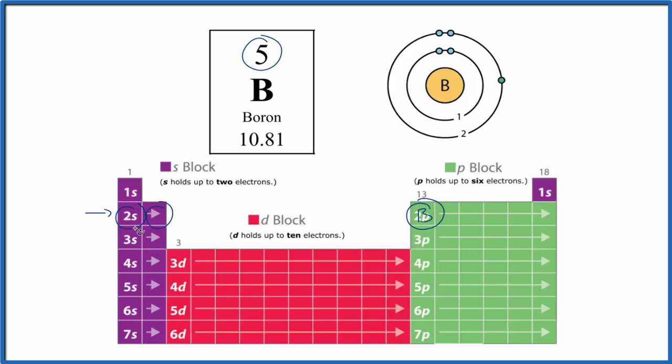So boron has three electrons in the second energy level. And these electrons, this second energy level, this is the highest energy level. These are called valence electrons. These are the electrons involved in chemical bonds, and they're very important in chemistry.